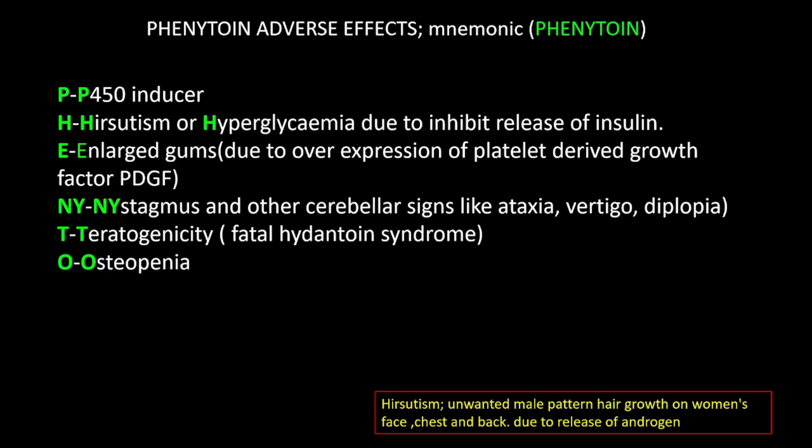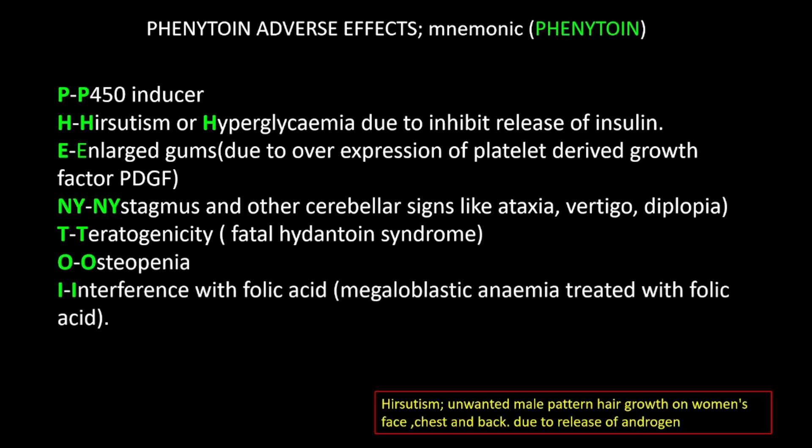O stands for osteopenia. I stands for interference with folic acid, causing megaloblastic anemia, treated with folic acid supplementation. N stands for neuropathy, that is peripheral neuropathy.